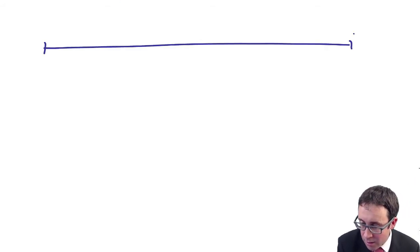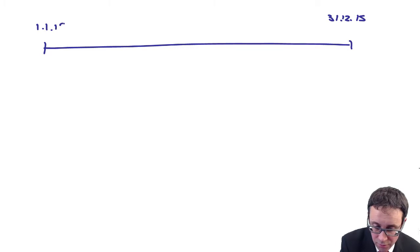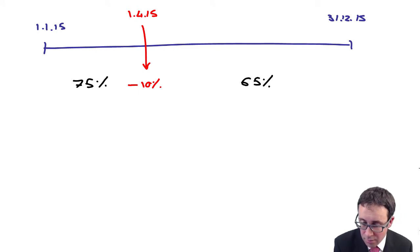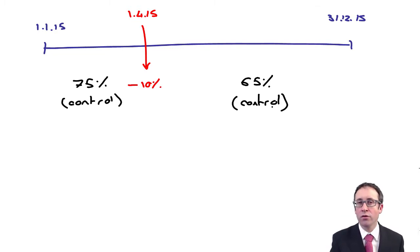Let's just draw that up. If we're looking there at our accounting year-end, we're looking at the 31st of December 2015. The start of the year was the 1st of January. Partway through the year, was the 1st of April 2015. We disposed of 10%. So previously, we had 75%. We now have 65%. So the key bit there is that we had control. And we still have control.